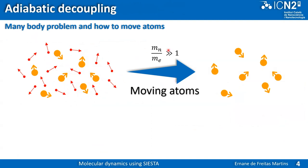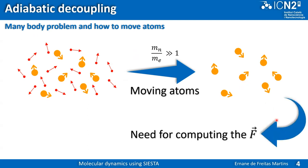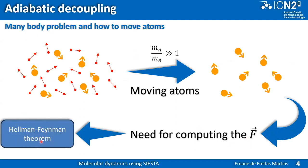We have a many-body problem of moving the atoms. To handle this, we use adiabatic decoupling because the mass of electrons compared to nuclei is very small. We move just the nuclei, and the electrons accommodate to the new positions. To move the atoms, we need to compute the forces and then move atoms in the direction of those computed forces. In SIESTA, a specific theorem is used for this — further details can be found in the presentation on the SIESTA webpage.